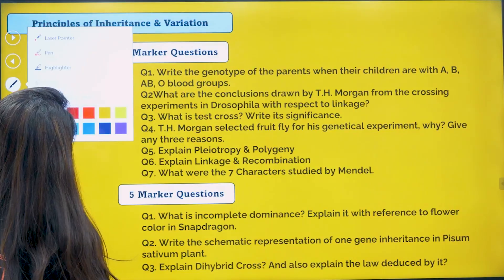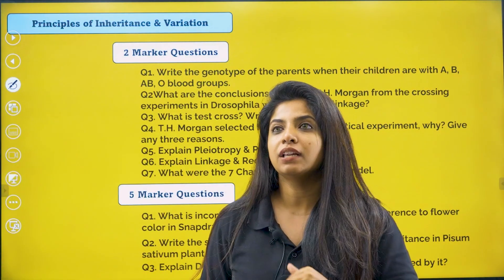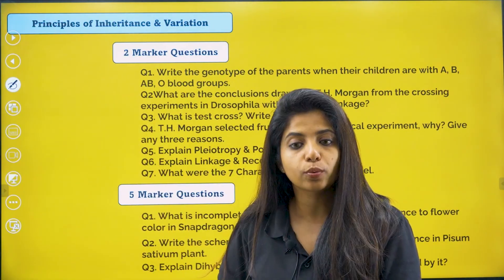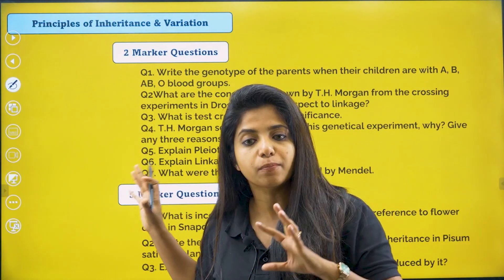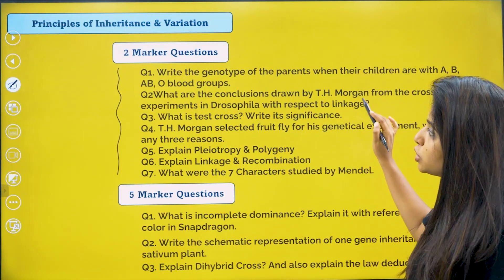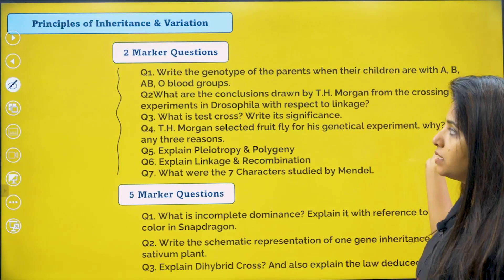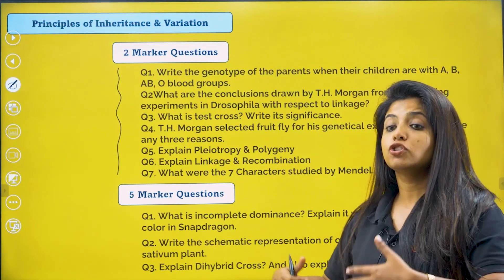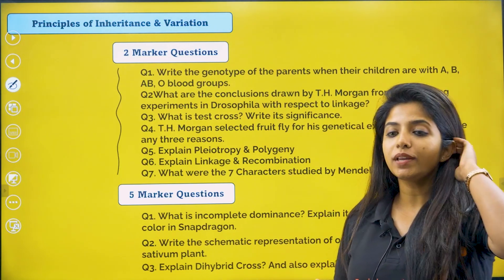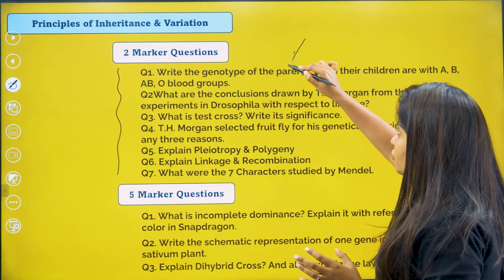Starting with principles of inheritance and variation. This chapter is there in some schools up to pleiotropy and polygeny, which is why I have included questions only until pleiotropy and polygeny. Two-marker questions that you can expect: questions based on blood groups — for example, the parent's genotype is given, what will be the children's genotype. You have to give examples of codominance and multiple allelism.